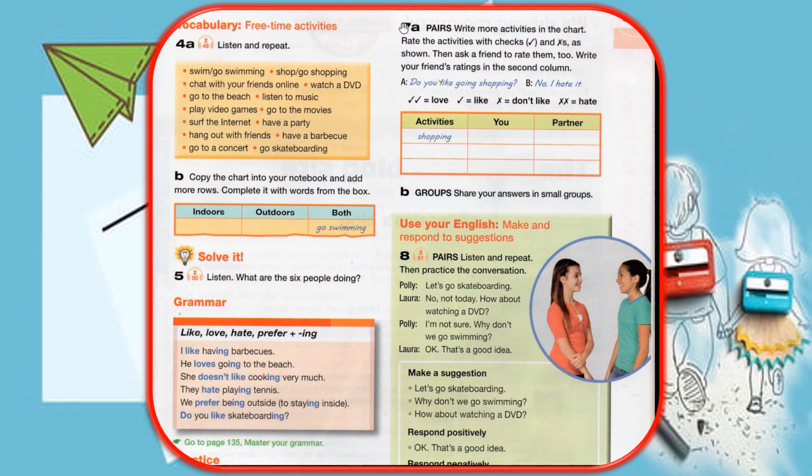Exercise 7a. Write more activities in the chart. Rate the activities with checks and X's as shown. Then ask a friend to rate them too. Write your friend's ratings in the second column. For example, do you like going shopping? No, I hate it. You have double check for love, one check for like, an X for don't like, and double X for hate. Here you have activities. You're going to write the activities here, also you and your partner.